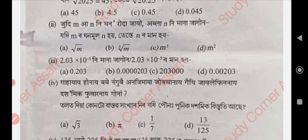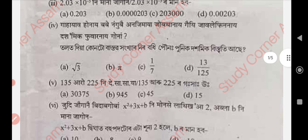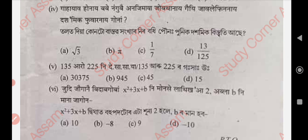This is option B. This is 0.0000203. Next question number 4 — this is option C. Next question number 5 — this is option C.